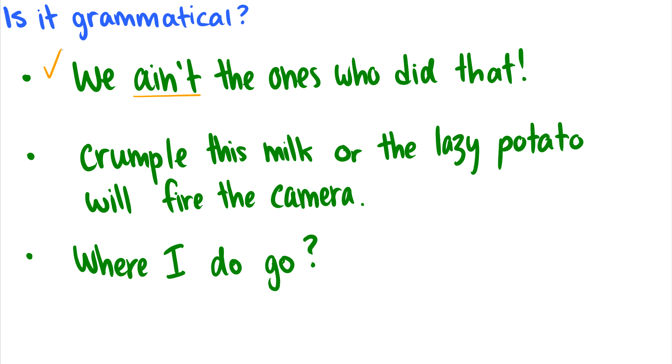What about the second sentence? Crumple this milk or the lazy potato will fire the camera. Okay, so this doesn't make any sense, but it is grammatical. So the meaning is weird, so we put a hashtag by it. But it follows regular sentence patterns. That's like saying verb this noun or some noun will verb some other noun. So the sentence structure is good. The grammatical structure is good. It just doesn't make any sense.